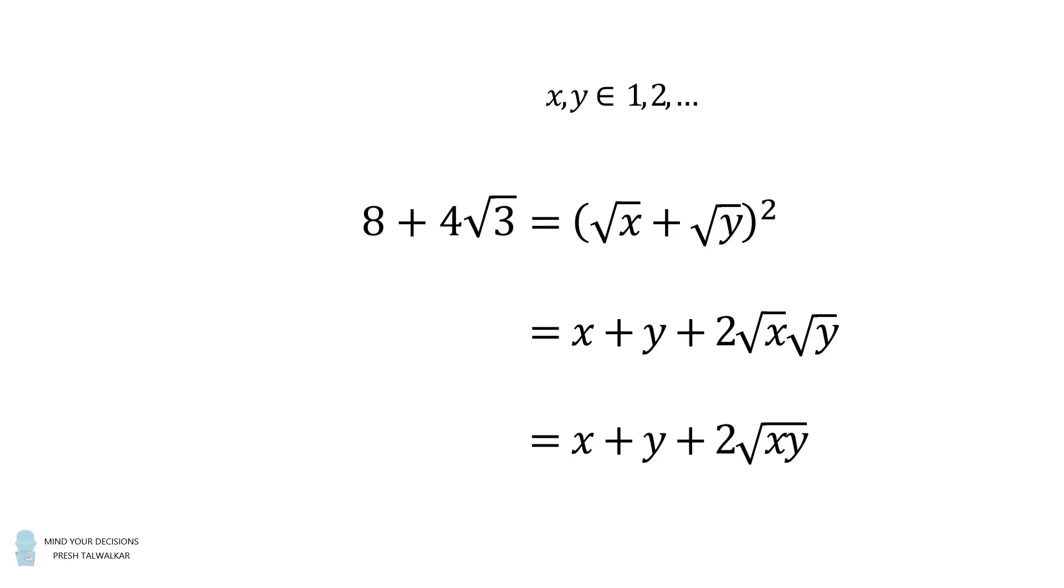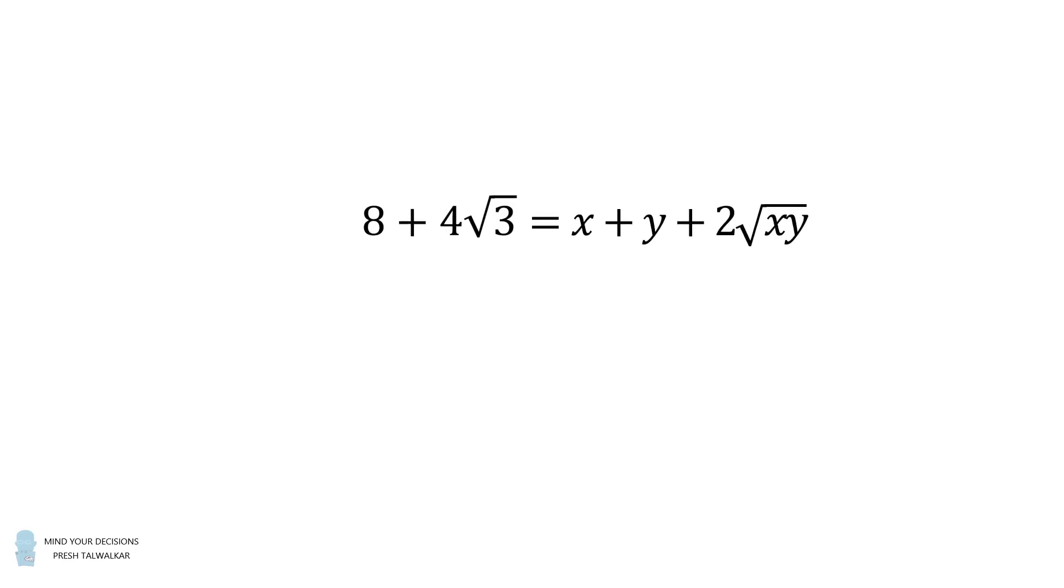So now let's continue our simplification. We want to make the left-hand side in the same form as the right-hand side. So let's do a little trick. We'll rewrite 4 as equal to 2 times 2. Then 2 is equal to the square root of 4. From here, the square root of 4 times the square root of 3 is equal to the square root of 12. So now both sides of this equation have the same form, so we can equate like terms.